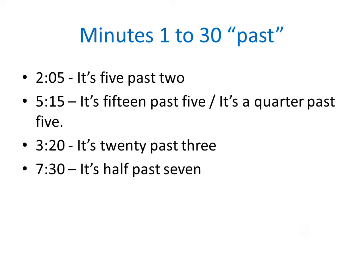There are sixty minutes in an hour. We say it's past the hour with minutes one to thirty. For example: It's five past two. It's fifteen past five. But instead of fifteen we usually say quarter — it's a quarter past five. It's twenty past three. It's half past seven.